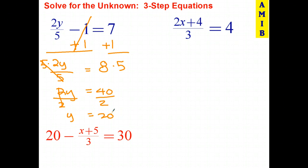Let's go ahead and check that and see if it's correct. So 2 times 20 is 40. 40 divided by 5 is 8. 8 minus 1 is 7. It looks like we have done all the steps correctly.